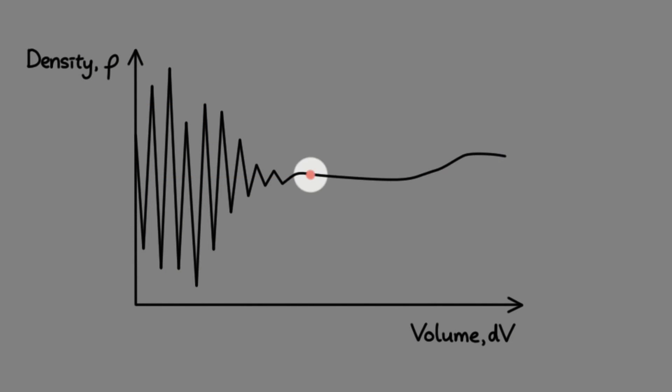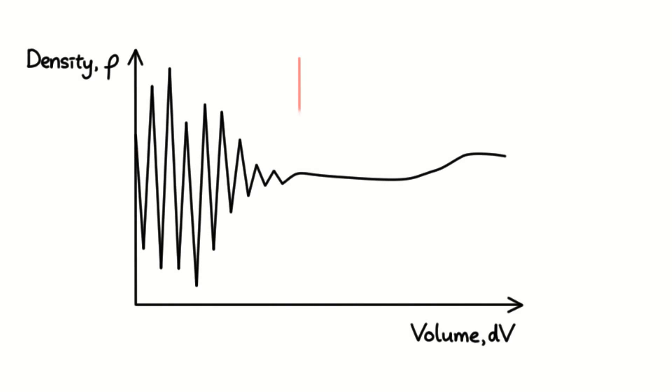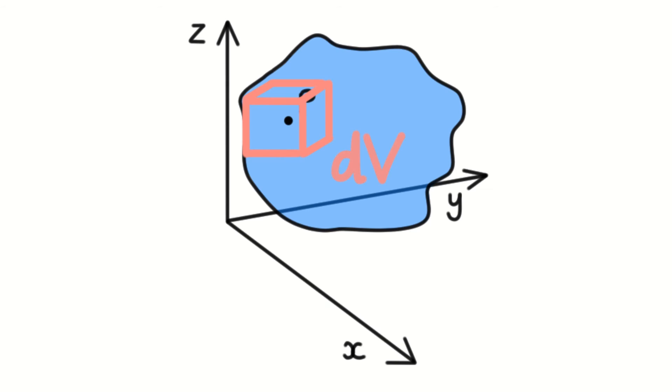Notice that the value of density becomes more erratic as dV goes below a certain value. We'll call this dV prime. This is because when dV becomes so small that it only contains a small number of molecules, it becomes impossible to calculate a definite value for density as the molecules cross into the volume.